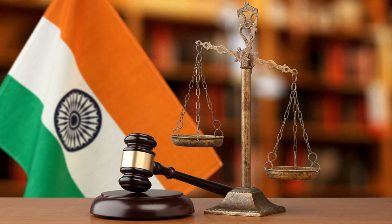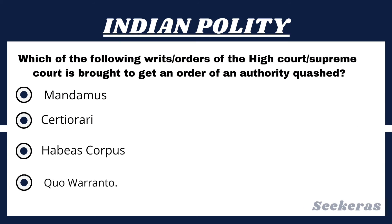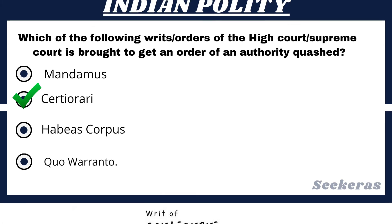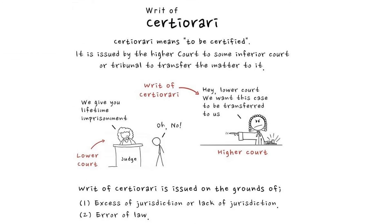Question number 9. Which of the following writs or orders of the High Court or Supreme Court is brought to get an order of an authority quashed? Option 1, Mandamus; Option 2, Certiorari; Option 3, Quo warranto; or Option 4, Habeas corpus. The answer is Option 2, Certiorari. The word certiorari comes from Law Latin and means "to be more fully informed."